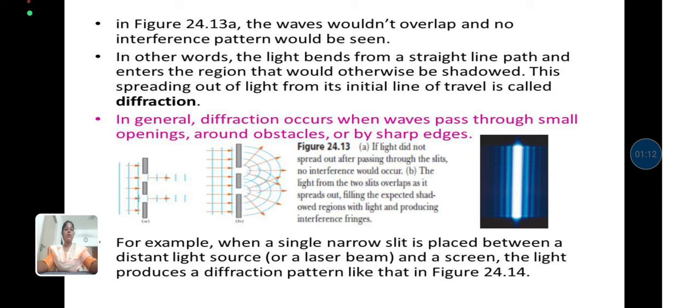In the figure below, the waves would not overlap and no interference pattern would be seen. In other words, the light bends from a straight line path and enters the region that would otherwise be shadowed. This spreading out of light from its initial line of travel is called diffraction.